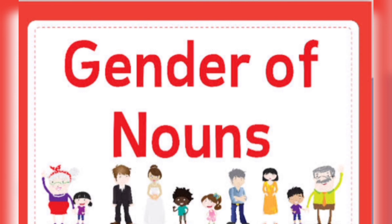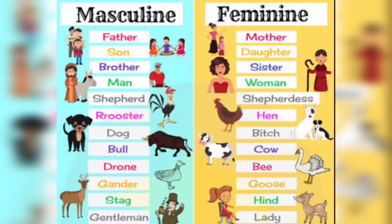Our next topic is gender of nouns. A gender specific noun is a noun that refers specifically to someone or something male or female. In English, the gender of most nouns is neuter. However, if a noun refers to something obviously male or female, then its gender will be masculine or feminine. Now, let's have a look at the list of genders here.